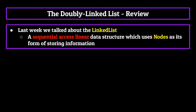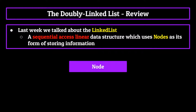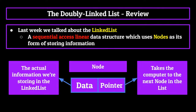Alright, so just as a review, last week we talked about the linked list — a sequential access linear data structure which uses nodes as its form of storing information. Each node is an object consisting of both data, or the actual information we're storing in the linked list, and a pointer which takes the computer to the next node in the list.